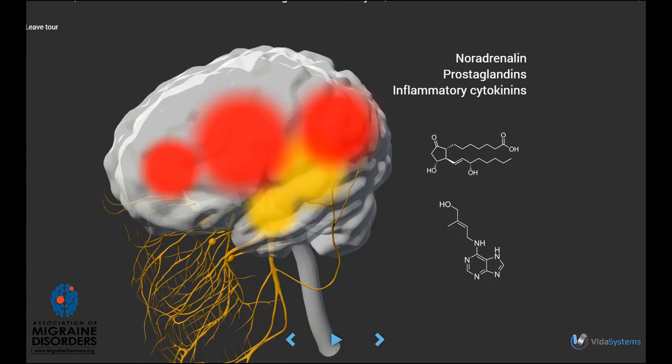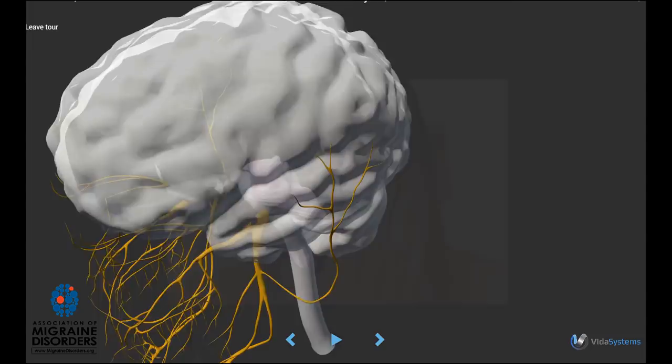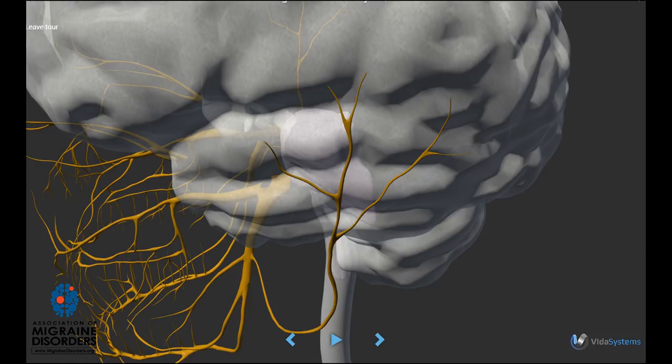This theory, called peripheral sensitization, is one of the mechanisms of an acute, throbbing migraine headache. Following the local inflammation and swelling of the dura, the trigeminal nerves react by sending signals back to the trigeminal nucleus, and a whole new series of chemical events follow, now in the midbrain.